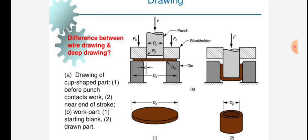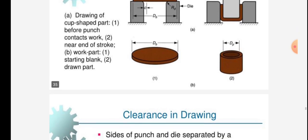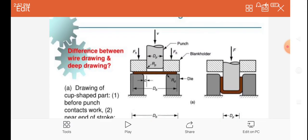B is work part: one is starting blank, two is drawn part. Thus this is the drawing operation.